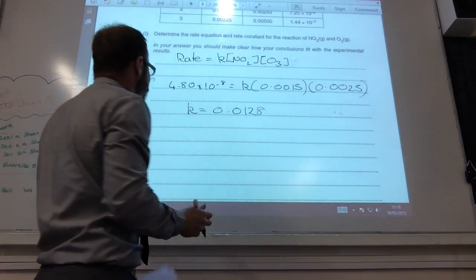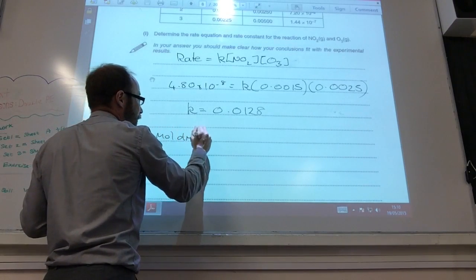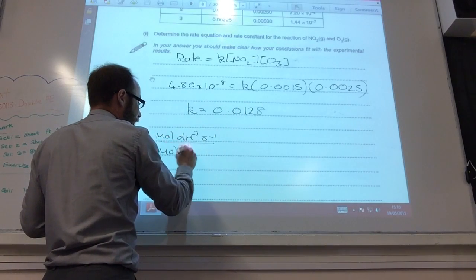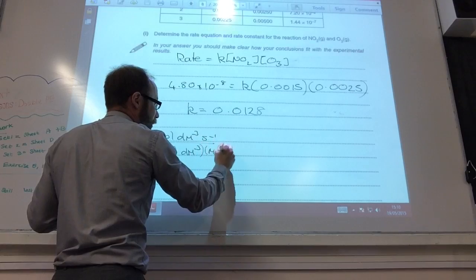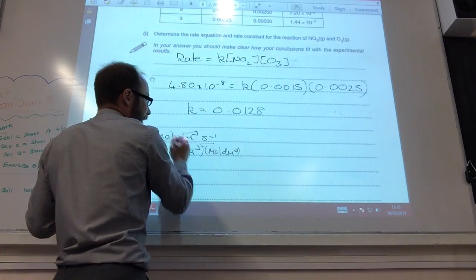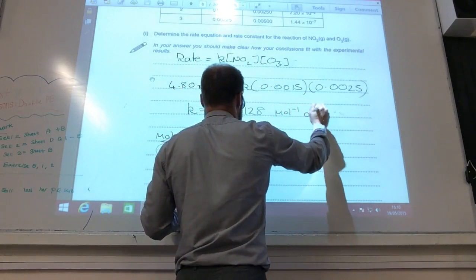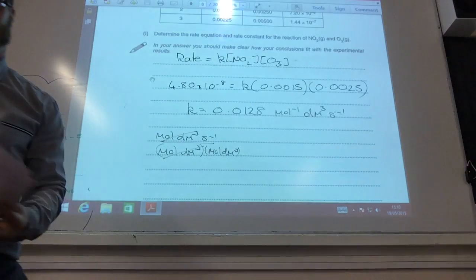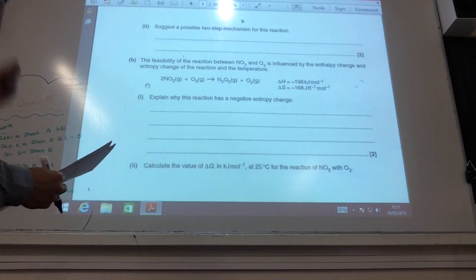So, if we're going to calculate units, well, let's have a look, we're going to end up with that. Remember, the rate's in moles per decimeter cubed per second. This is going to be in moles per decimeter cubed times moles per decimeter cubed. When I rearrange these two, that cancels with that. So, the units are going to be moles to the minus 1, decimeters cubed, seconds to the minus 1. So, that question goes, that wasn't too bad, to be honest.